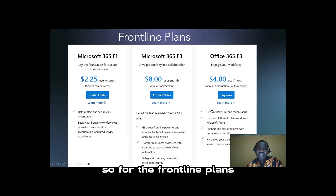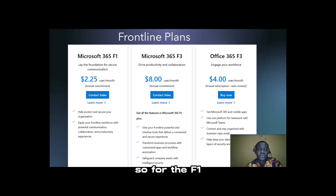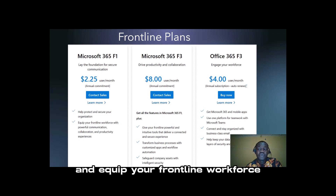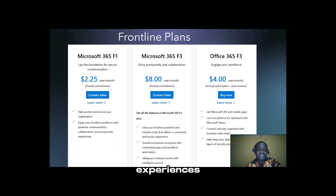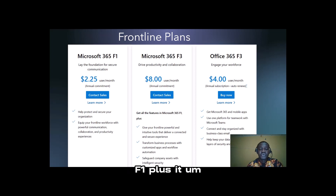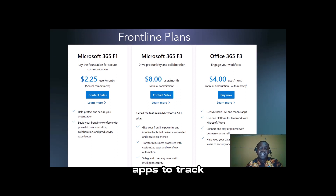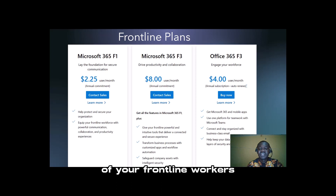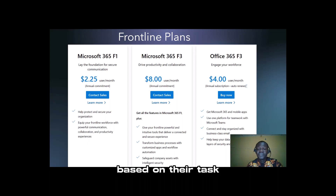For the frontline plans, we have Microsoft 365 F1, F3, and Office 365 F3. F1 helps to protect and secure your organization and equip your frontline workforce with powerful communication, collaboration, and productivity experiences. Microsoft 365 F3 contains what's in F1 plus it transforms your business with customized apps — for example, apps to track hourly or daily activities of your frontline workers and log timesheets per hour or per day based on their tasks.